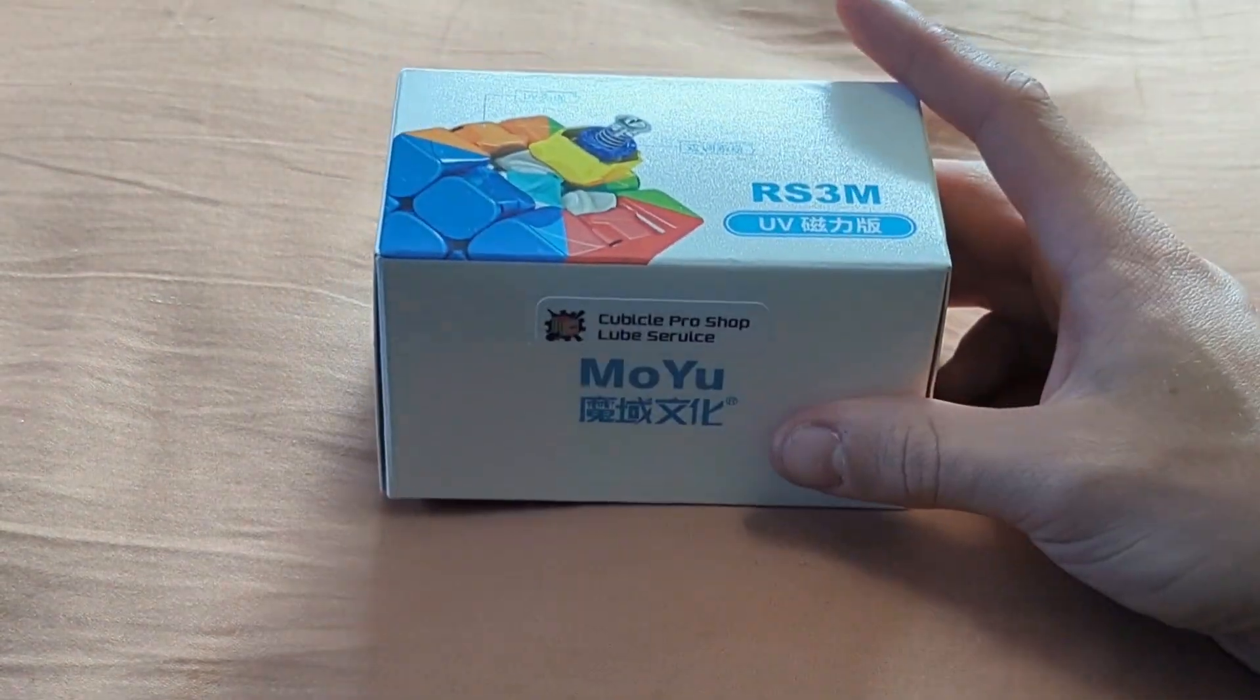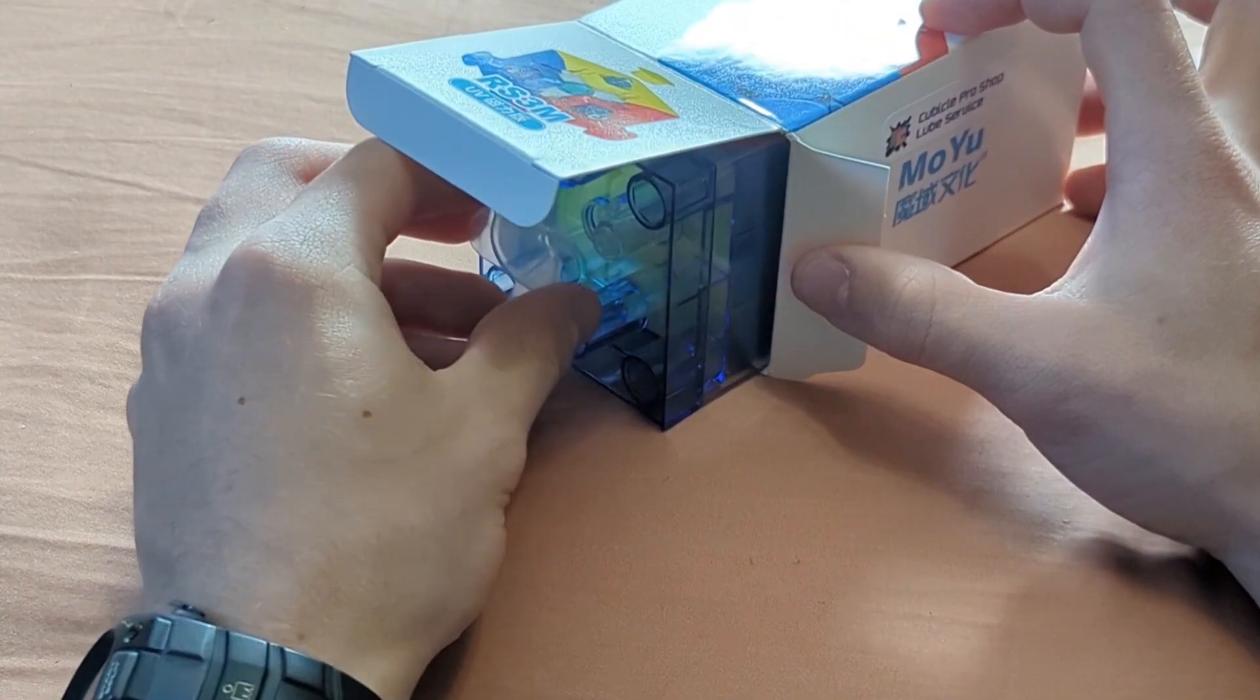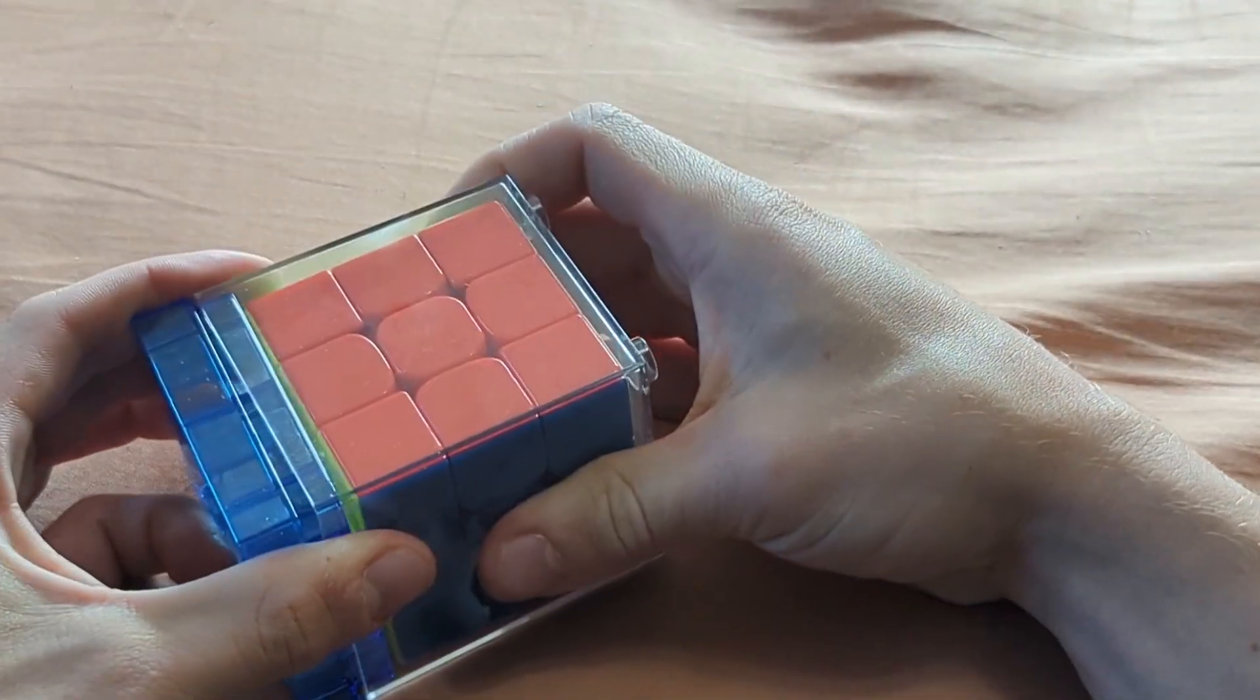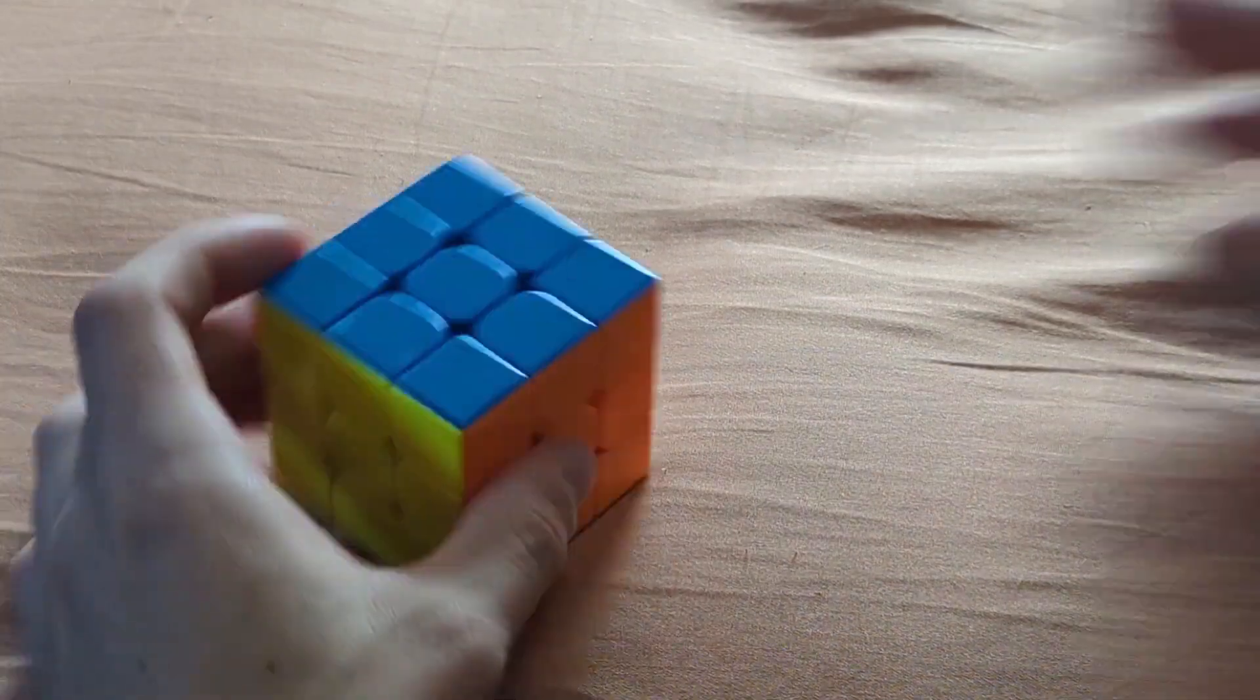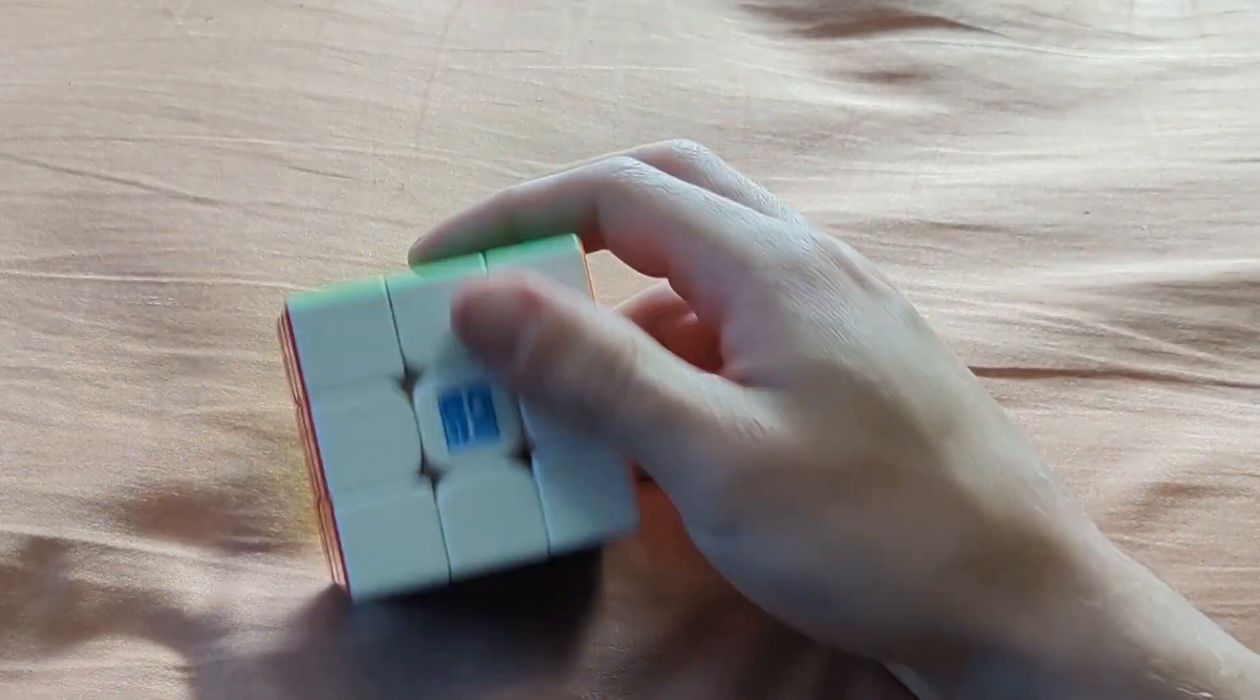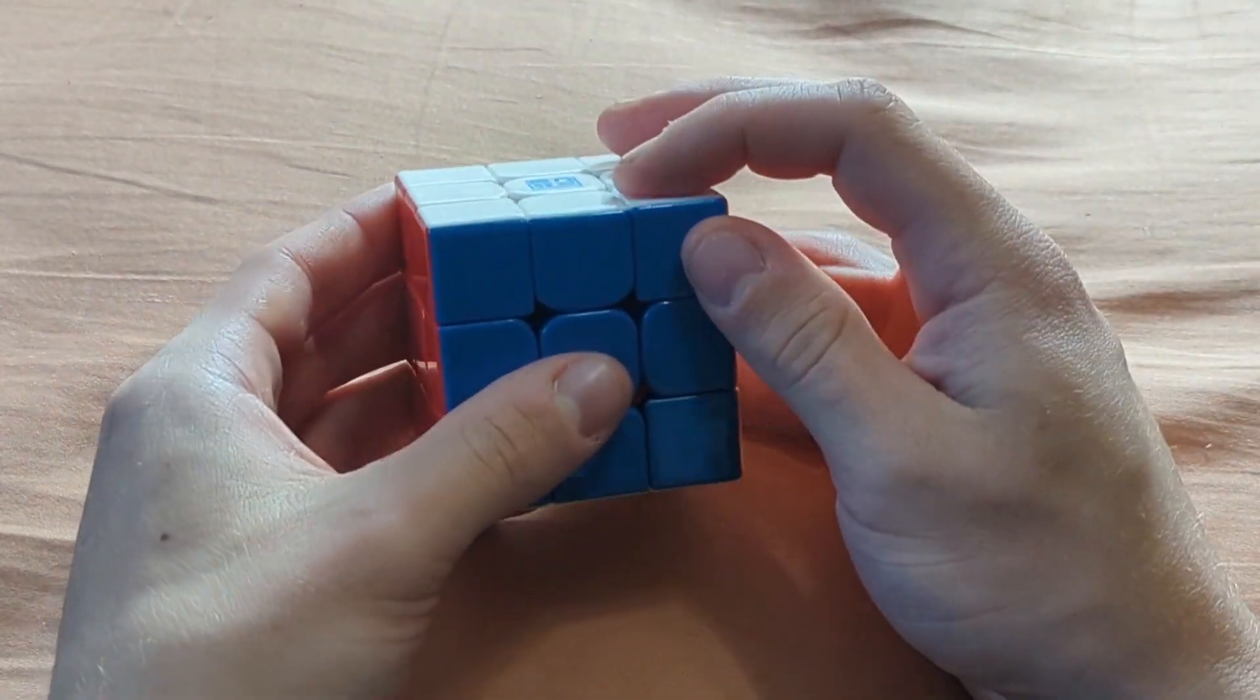Next up, because this wants to open on me, I'm gonna do the RS3M 2020. This is UV with the typical loop service. Oh yeah, this is really gunned up, but that's pretty typical. Of course this is going to be really slow out of the box, but let's do some turns.